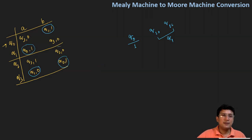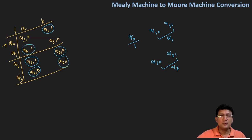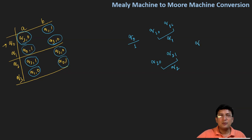Looking at q2, you can see that it produces the output zero in one case and the output one in another. So I will also split q2 into two different states: q20 and q21. For q3, it only takes zero as the output, so there will be no differentiation and q3 will produce the output zero — only one state in the equivalent Moore machine.